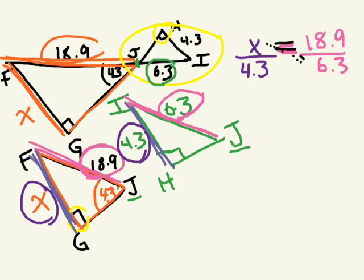So because we don't know X, we're just going to write X times 6.3. But then we're going to cross multiply. Can we figure out 4.3 times 18.9?